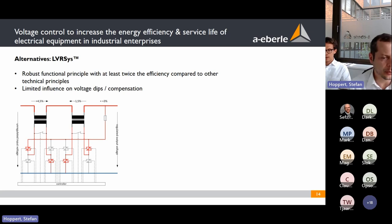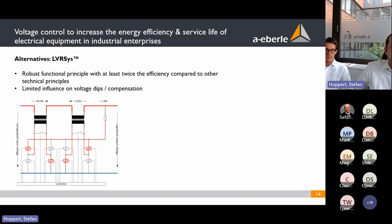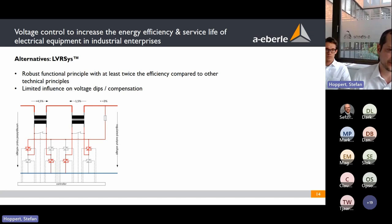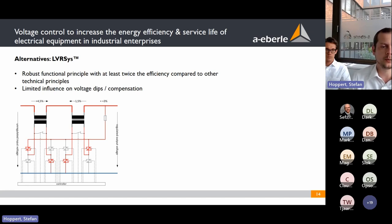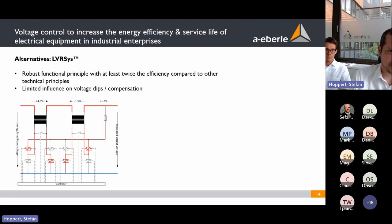However, we must be transparent: our system has limited influence on voltage dips and compensation. Voltage dips are a major topic for industrial customers, and we have to acknowledge this limitation. I'll give a calculation example to explain.